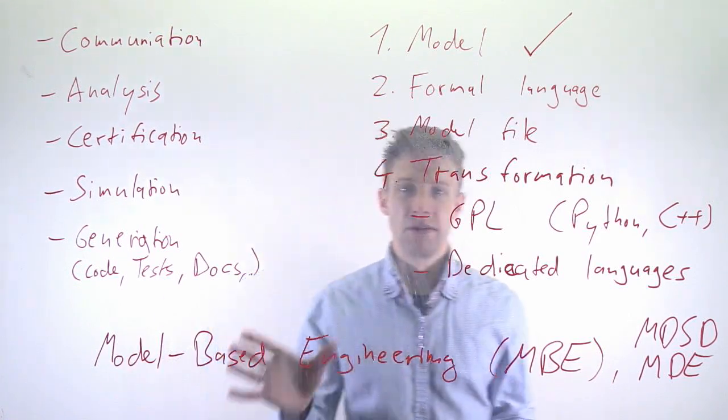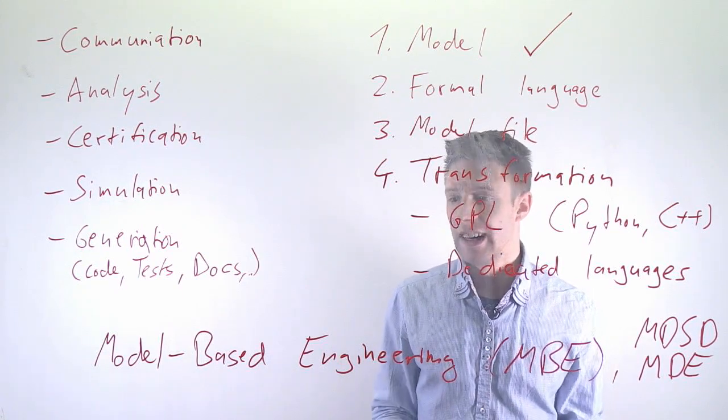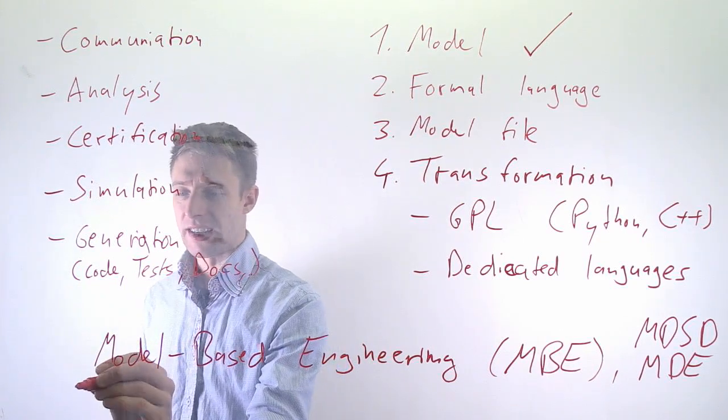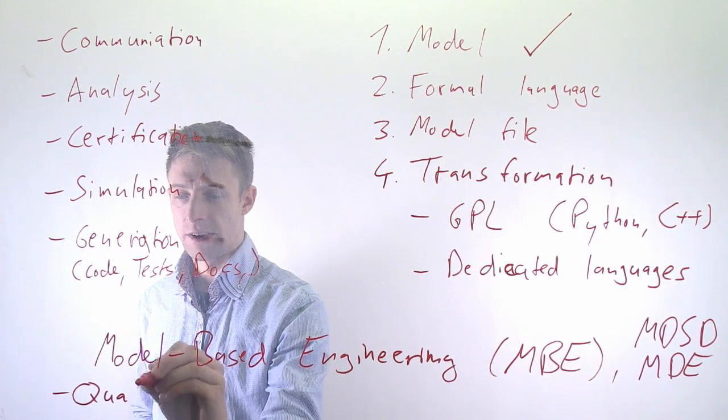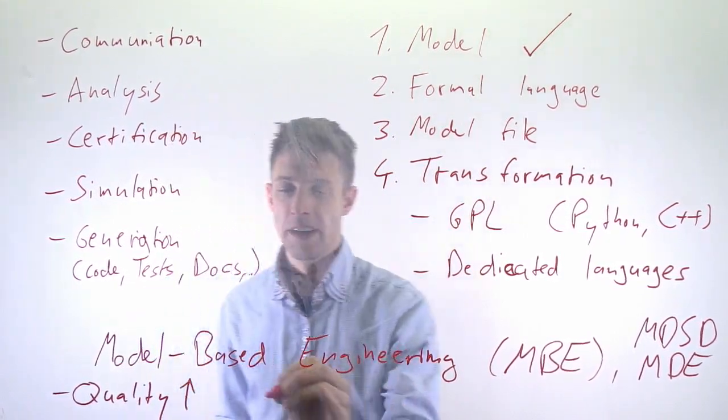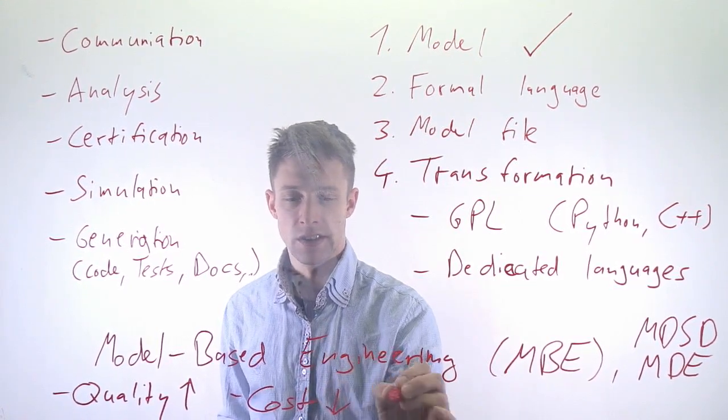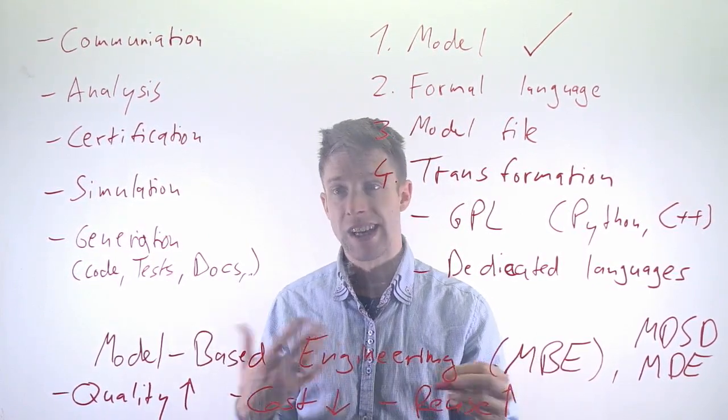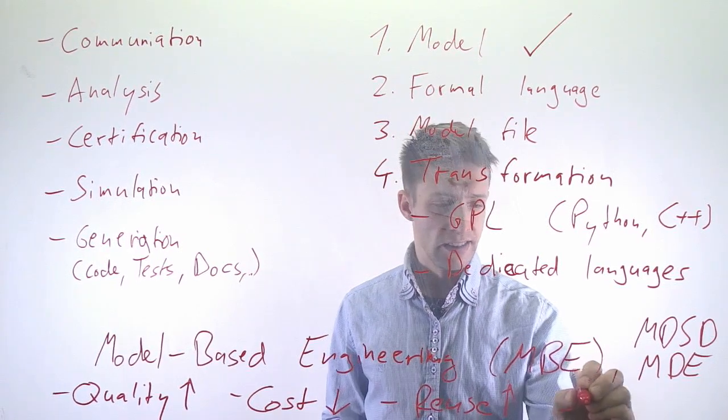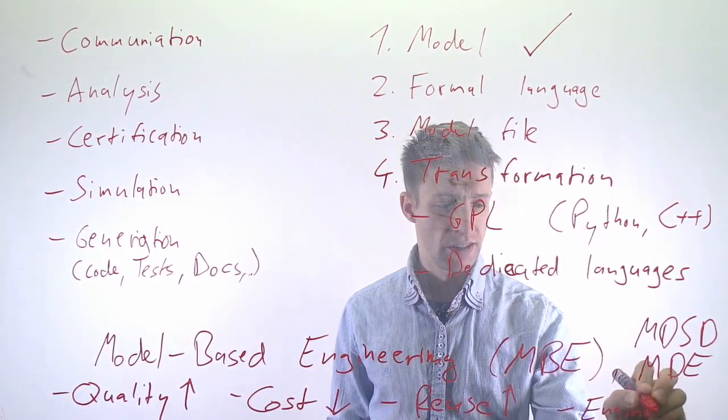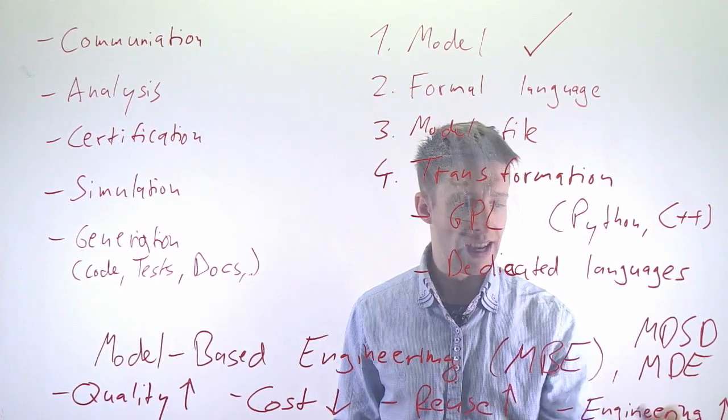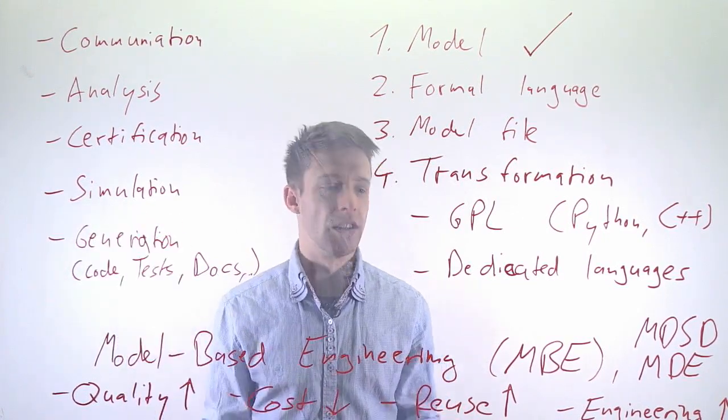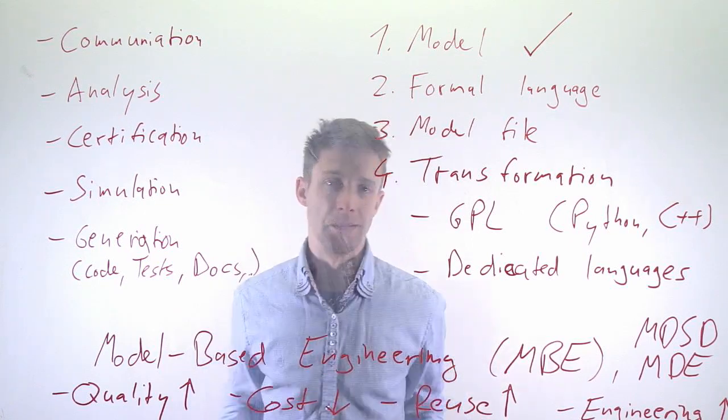So why would we do this? Why would we write models instead of code? What do we do with that? The general idea is that we can improve our overall development. And what we, in particular, would like to achieve is a higher quality. So quality goes up. We would like to reduce our costs. We would like to increase the reuse of the models and the software. And in a way, we would like to improve our engineering capabilities. So we want to be able to use more engineering techniques to reason about things, for example, use simulation and so on. We're not just coding and see whether it works, but we're doing this in a bit more systematic way.